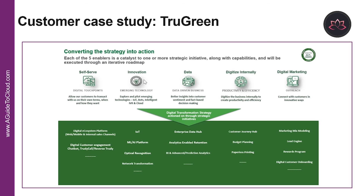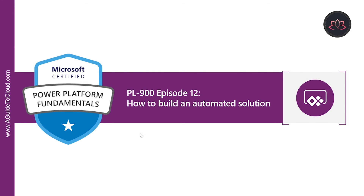TruGreen's customer case study is an example of how they use Power Automate to provide proactive and predictive services to their customers. As part of TruGreen's commitment to help customers live life outside, they teamed up with Microsoft to build a new artificial intelligence-enabled virtual agent bot. That concludes this lesson. In the next video, we will learn about how to build an automated solution. I'll see you in the next one — take care.